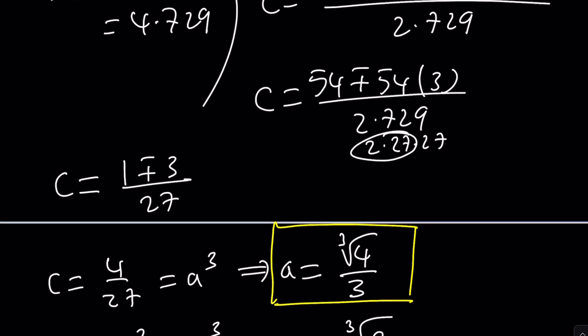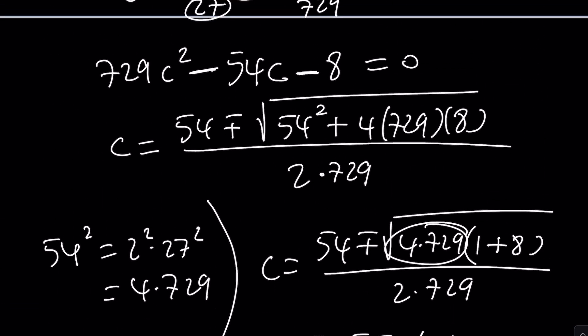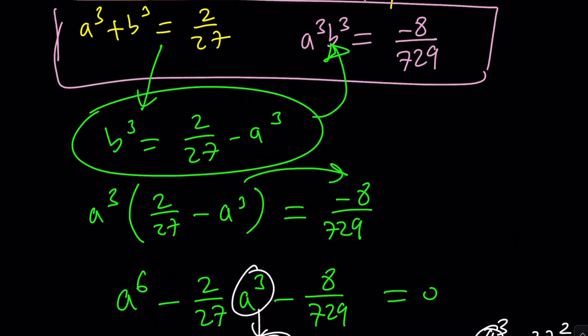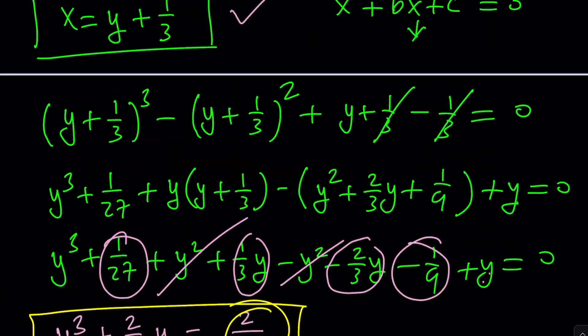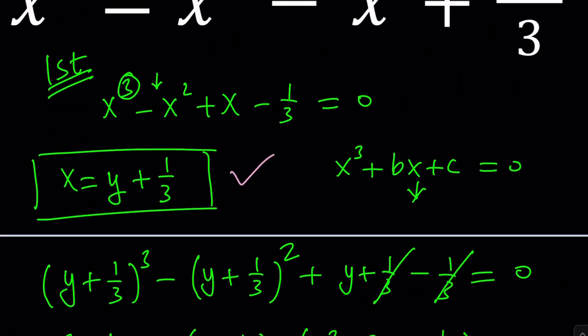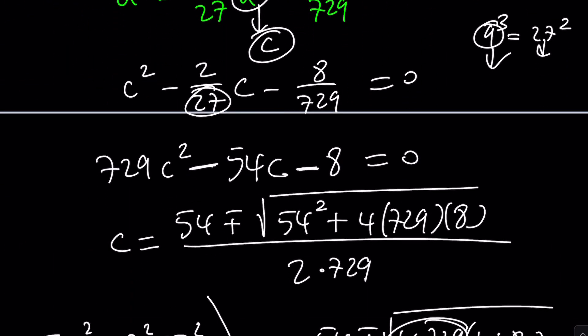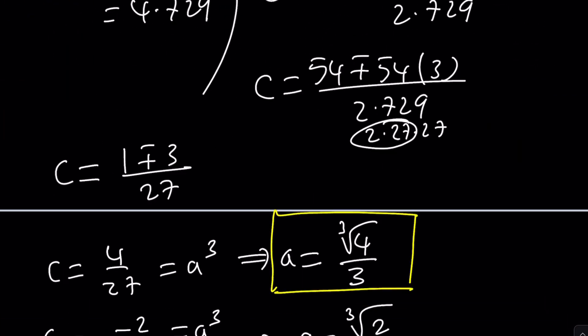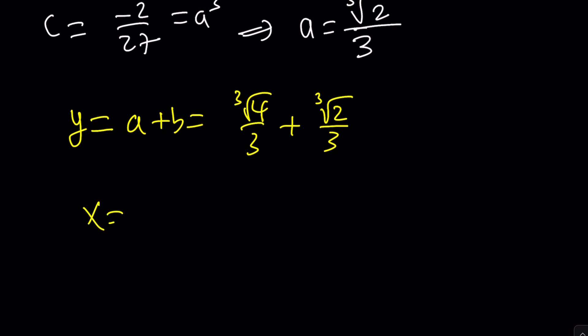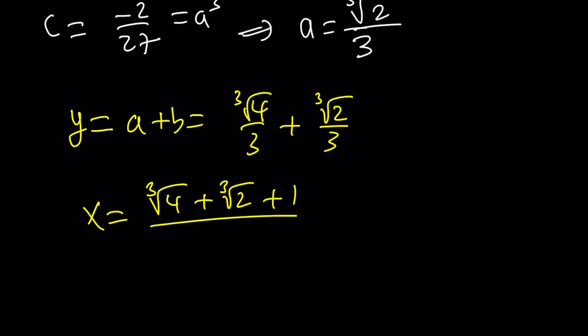If you switch them around, it doesn't matter — you get the same thing. But now I need to go to the x world, and the relationship is x equals y plus one third. So x is just going to be this number plus one third. To keep a long story short, we can write it with a common denominator, which is really cool. So we get the solution as a cubic expression, and this is real.